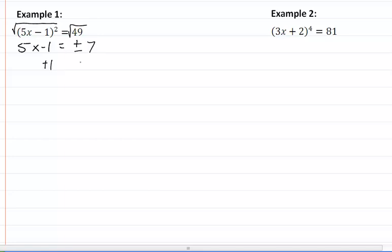We will add 1 to both sides. So now we have 5x equal to, well 7 plus 1 gives us 8 and a negative 7 plus 1 gives us a negative 6.